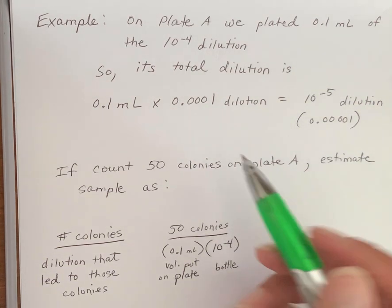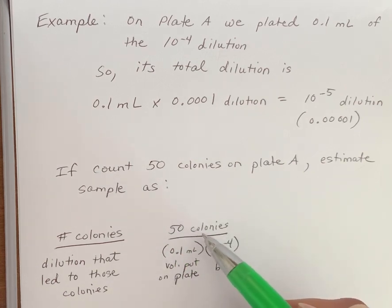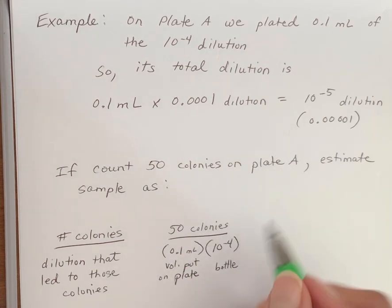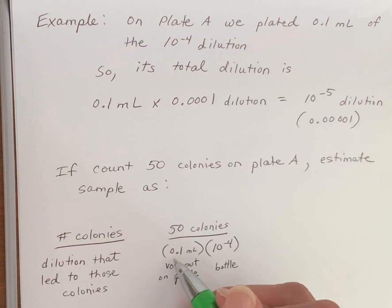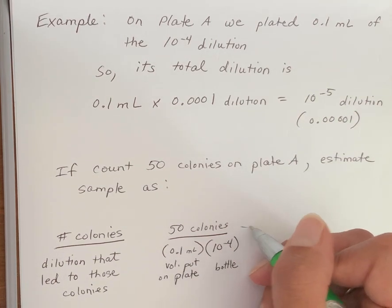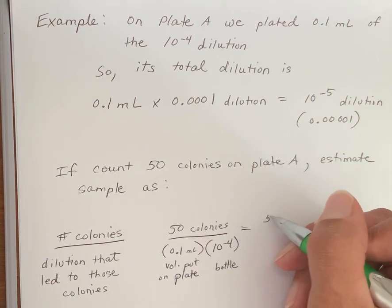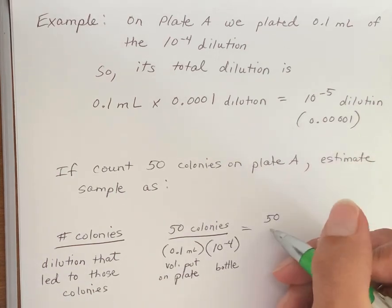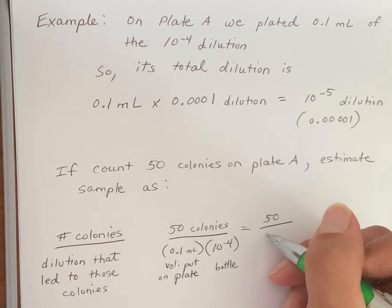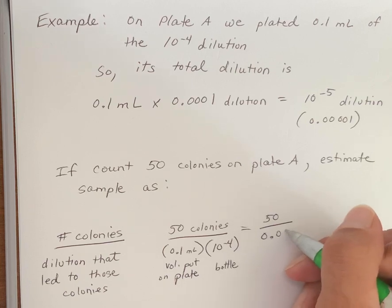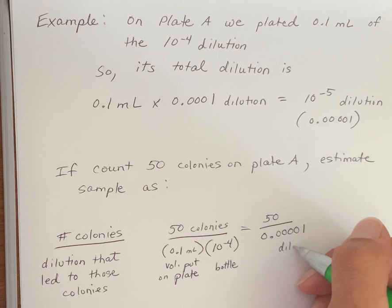So the number of colonies on this plate in this example is 50 colonies divided by the volume that you put on the plate times the concentration of the bottle. So that's the total dilution. So that gives you 50 divided by 0.00001 dilution.